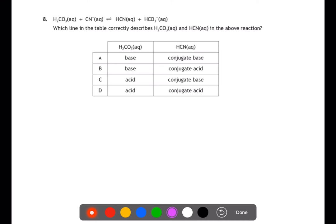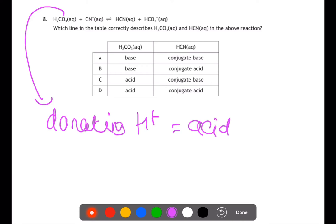Question eight. Which line in the table correctly describes H2CO3 and HCN? Here we're looking for acid base and conjugate acid base pairs. If we start by looking at H2CO3, on the right hand side we can see that this becomes HCO3 minus. We've lost one of the H atoms here which means that it's donating an H plus, which means that it's acting as an acid. So we can ignore A and B as answers. If we look at the HCN on the right hand side, it was CN minus before. So CN minus accepted the H plus so it's acting as the base, which means that HCN is the conjugate acid in that pair. So our answer here is D.